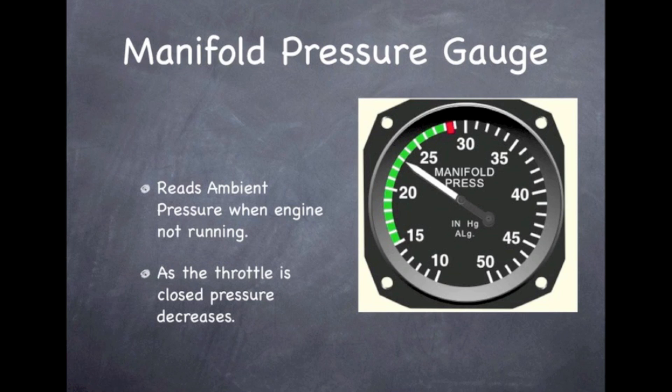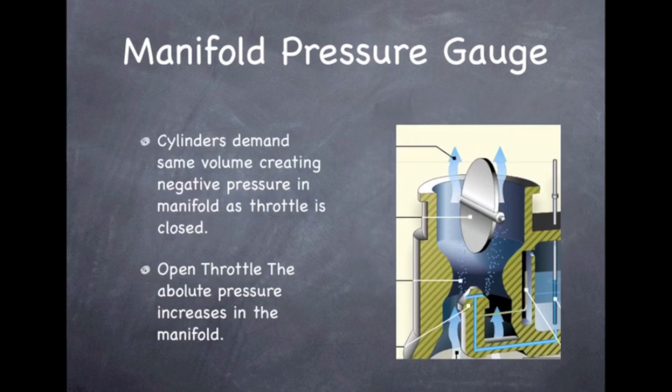It reads ambient pressure when the engine's not running, of course. And as the throttle is closed, pressure decreases. The cylinders demand the same volume, creating a negative pressure in the manifold as the throttle is closed. And as the throttle is open, the absolute pressure increases in the manifold. Therefore, increasing the manifold pressure as we open the throttle.